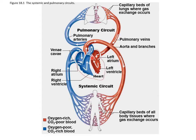Then it's pumped out into what we call the pulmonary circuit to the capillaries in the lungs that directly connect with alveoli. That's where the gas exchange occurs — CO2 is dropped off, oxygen is picked up — and back through pulmonary veins to the left atrium and round and round.